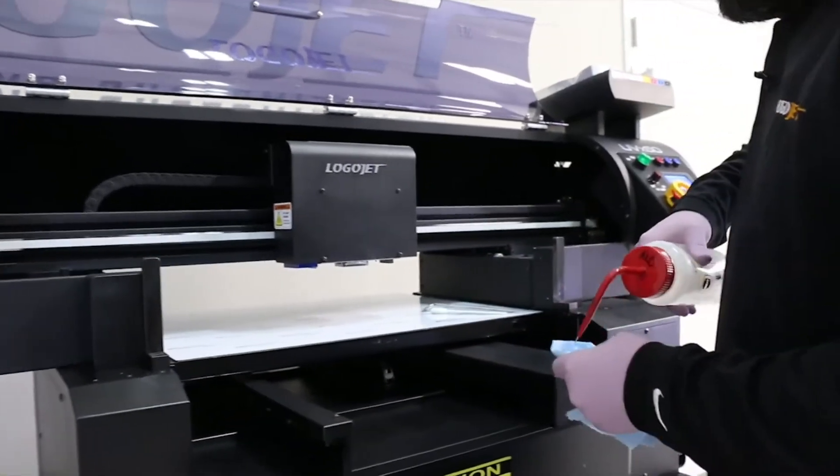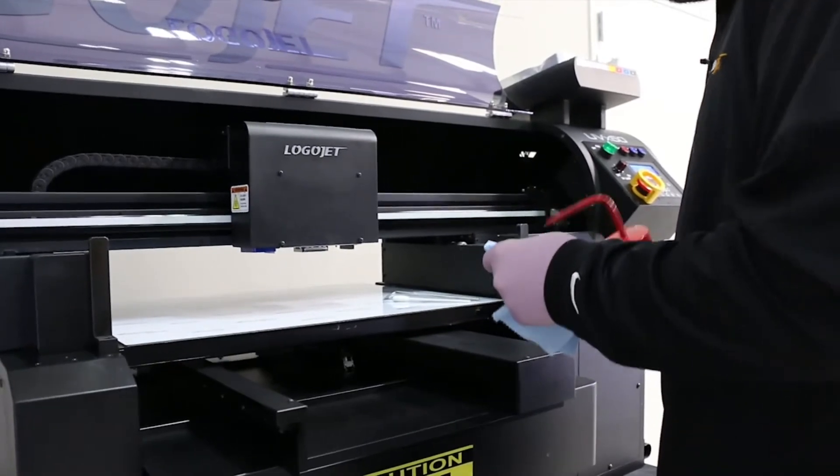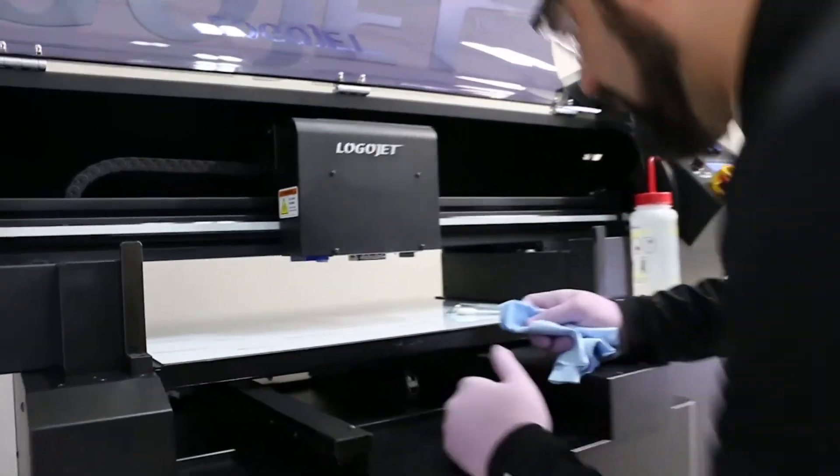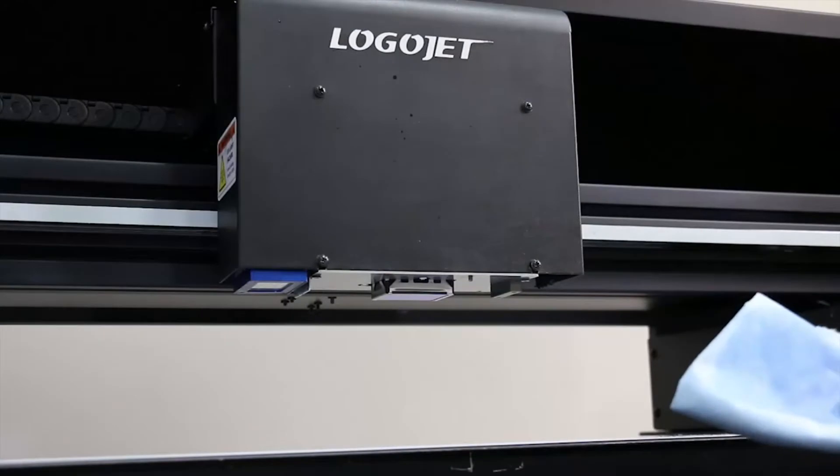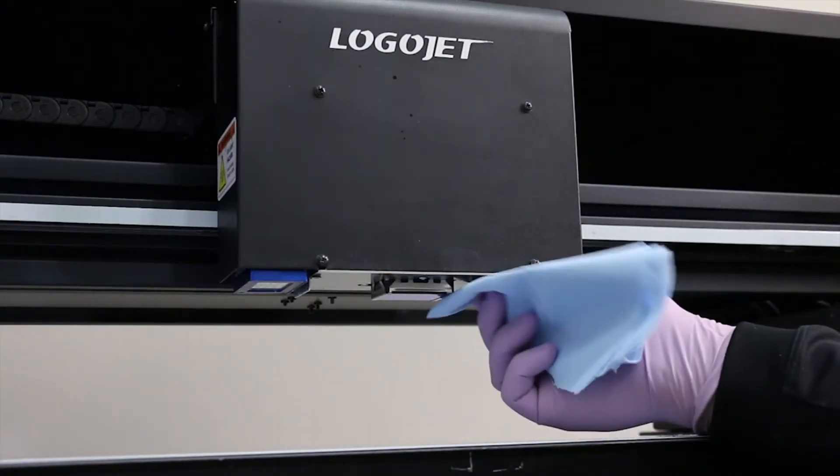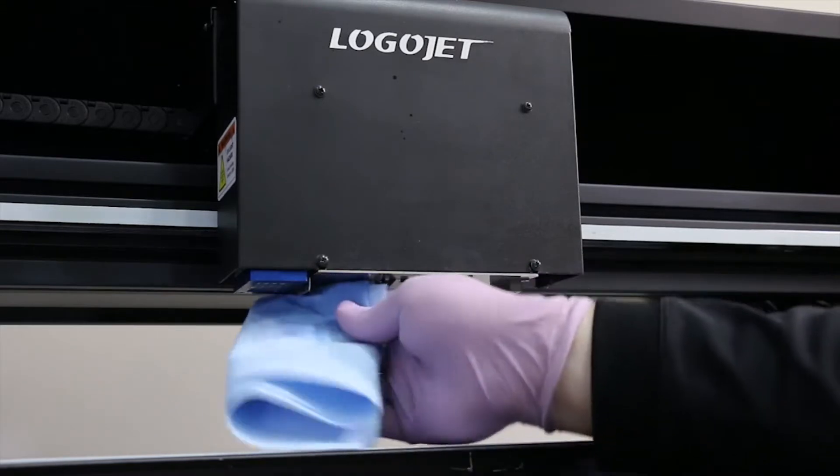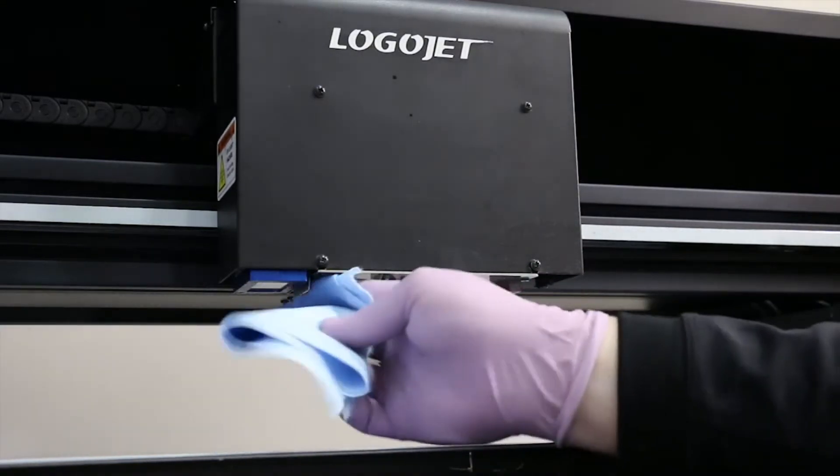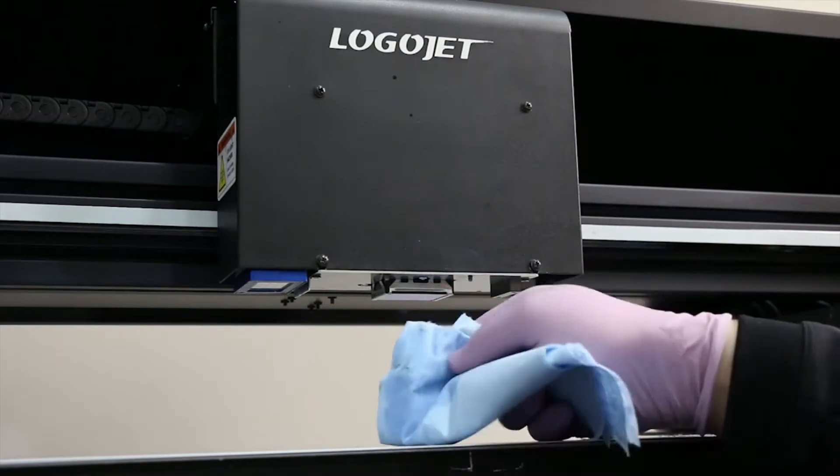We're going to start cleaning the carriage by applying some alcohol to our lint-free cloth, and then we're going to wipe down all of the protrusions that we have underneath the carriage. We're going to wipe this here, we're going to wipe this one here, and we're going to clean basically everything underneath that has ink on it.